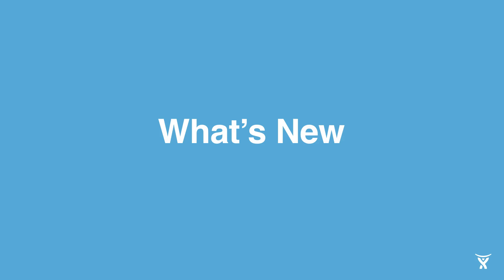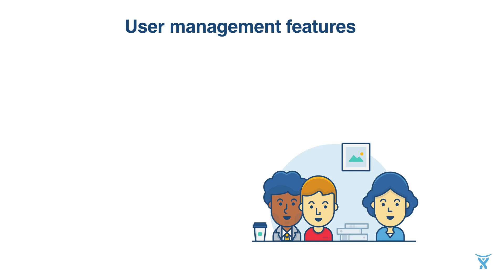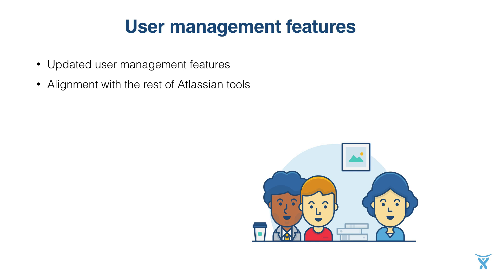That was a brief overview of key Fisheye and Crucible features, and now we are going to talk about the 4.0 release. First of all, it includes long-expected user management features — we communicated with many customers and lots of them requested this. Single sign-on via Crowd is now available in Fisheye and Crucible, and it is consistent across the Atlassian tool stack. You can easily add user groups from Jira or other Atlassian products to Fisheye and Crucible in seconds. We also use the same UI that other Atlassian products use, so your user management experience is now aligned with the rest of our tools.